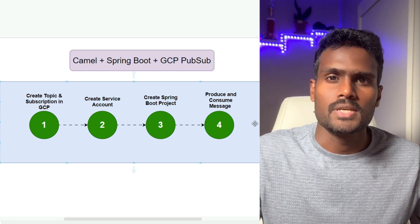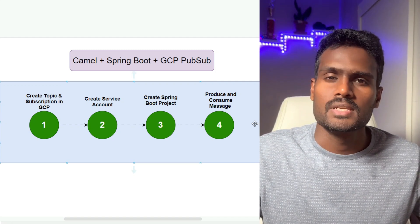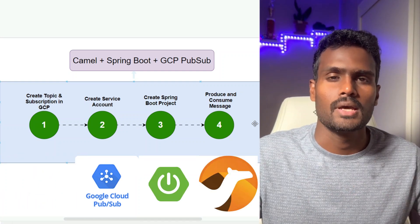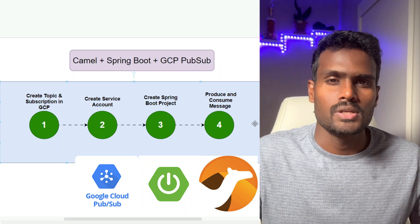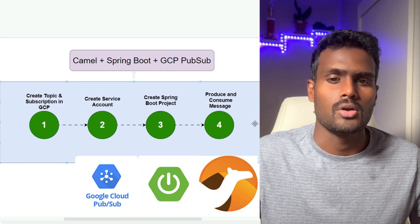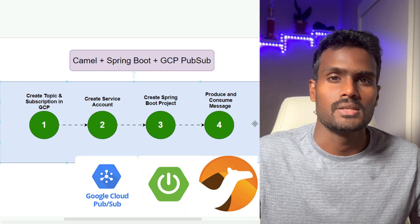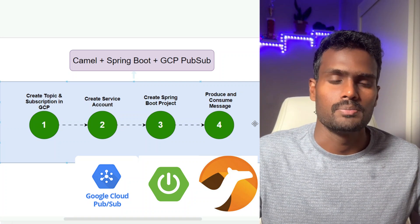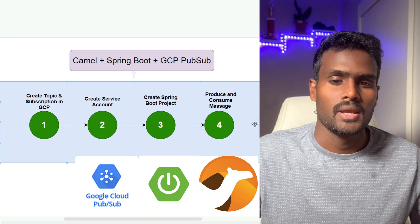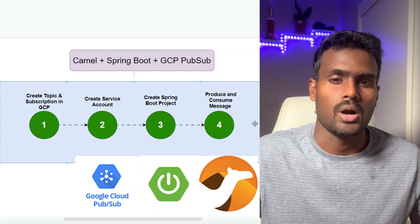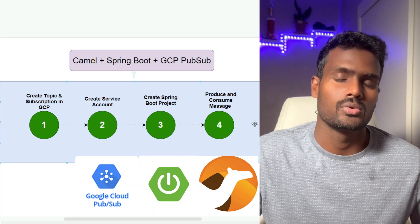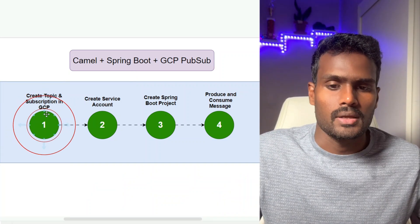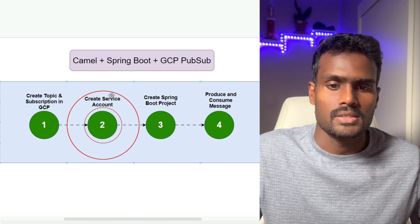Hey guys, welcome back to my YouTube channel. In this video we will see how we can connect to Google Cloud Pub/Sub using Spring Boot and Camel. We have already seen how we can connect with a normal Spring Boot and Spring Integration — we just published the message into Google Cloud Pub/Sub. But in this video I'll show you how you can consume and also produce messages into Google Cloud Pub/Sub. I'm going to create the topic and subscription and then create the service account.